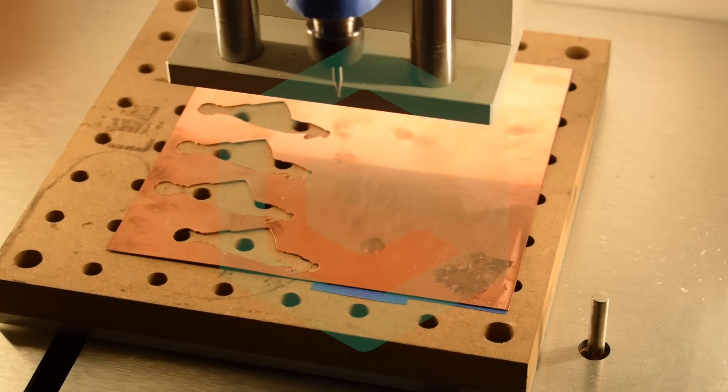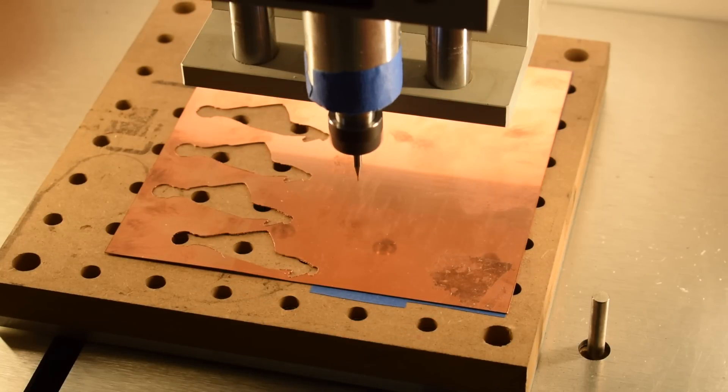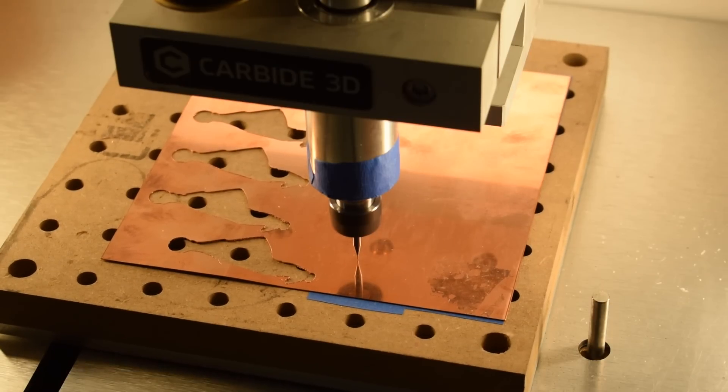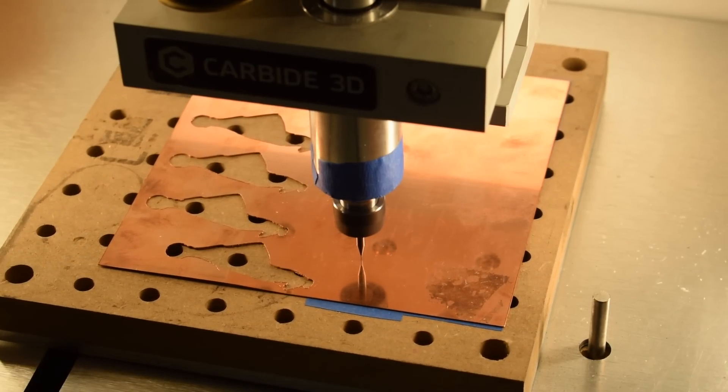Hey guys, Winston at Carbide3D here. Thin sheet metals are a popular starting material for jewelry or other artistic applications, so today let's look at carving some small pieces out of copper and brass stock.